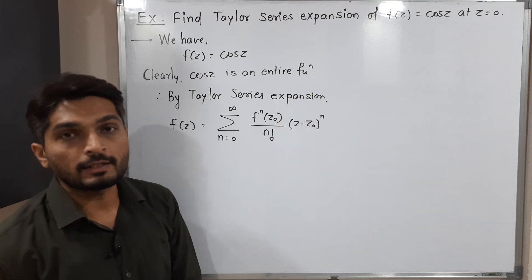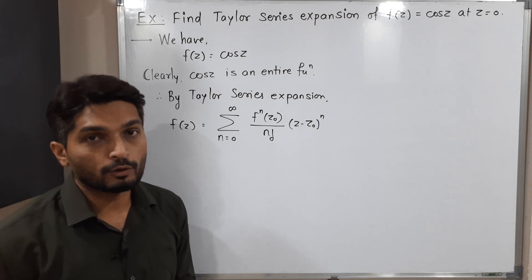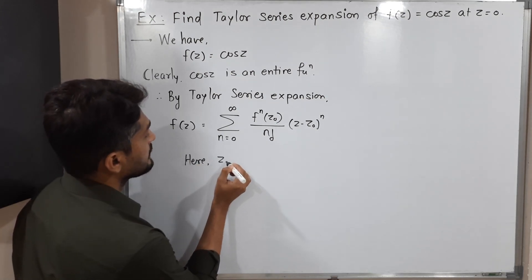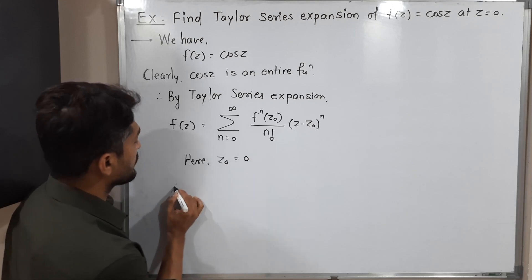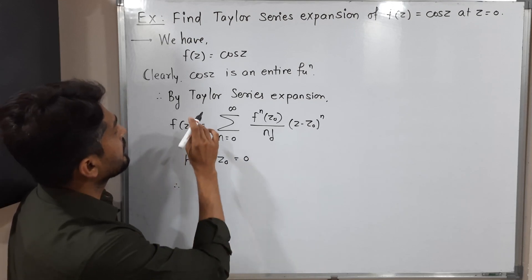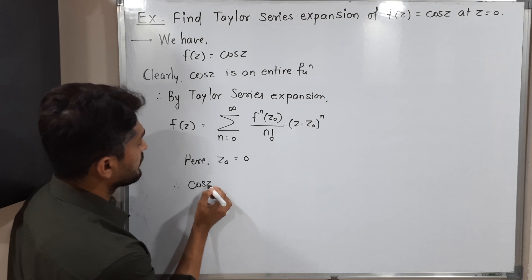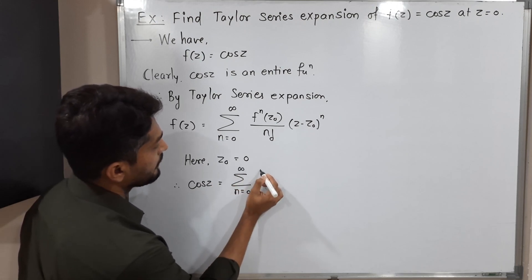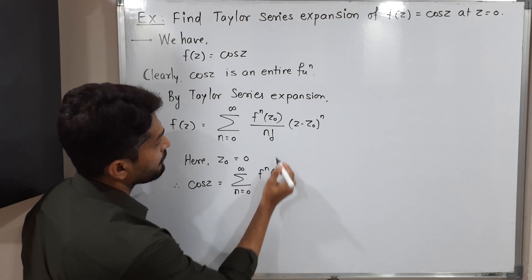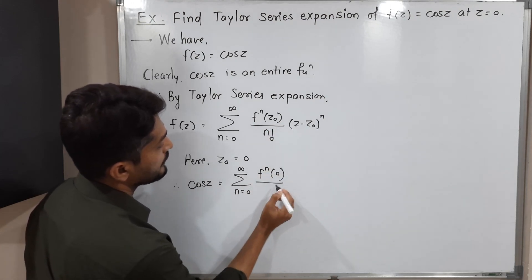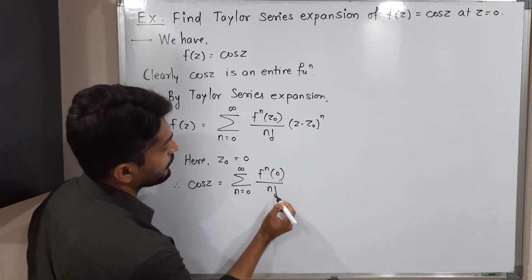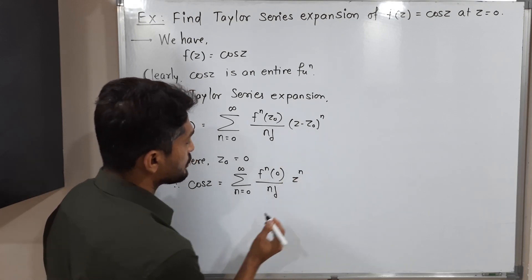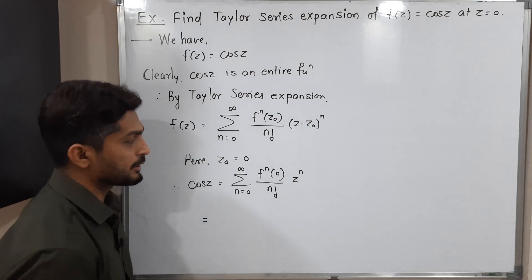The given point is z = 0, which means our z₀ is zero. So the series becomes: cos(z) = summation from n = 0 to infinity of the nth derivative of f at 0, upon n factorial, times z raised to n.